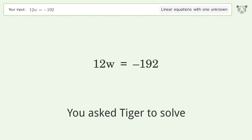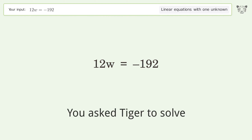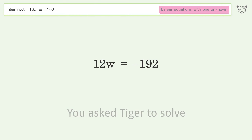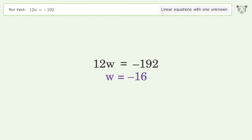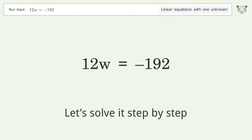You asked Tiger to solve a linear equation with one unknown. The final result is w equals negative 16. Let's solve it step by step.